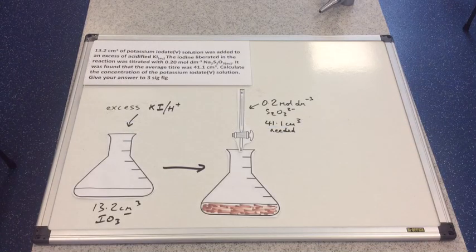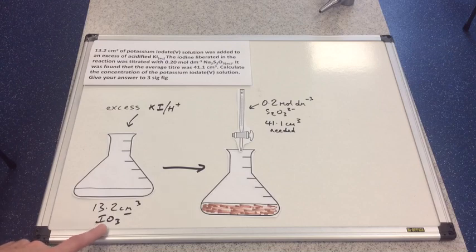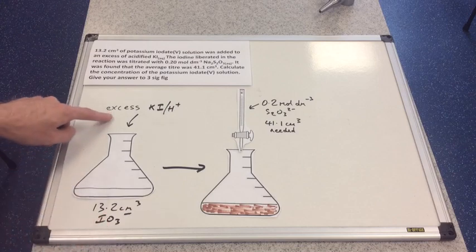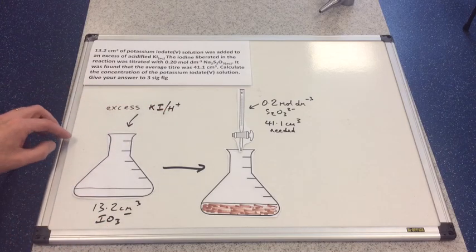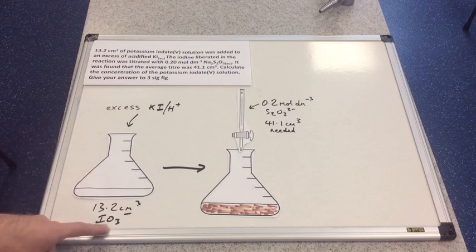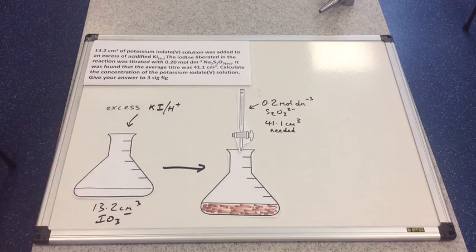Here's the first example: we've got 13.2 cm³ of potassium iodate(V) solution sitting in the conical flask. Potassium iodate(V) contains the IO3⁻ ion — that's the iodate(V) ion. An excess of acidified potassium iodide solution is added. The oxidizing agent is the iodate(V), which oxidizes the iodide to iodine.